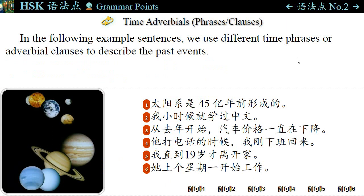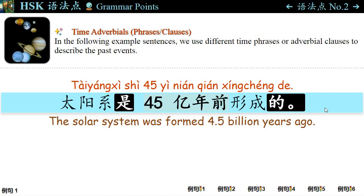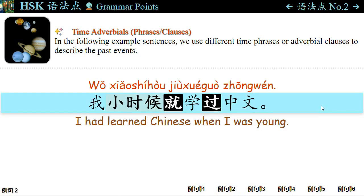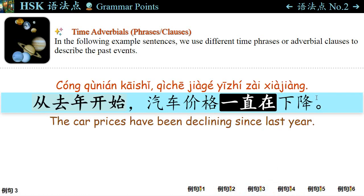语法点二: In the following example sentences, we use different time phrases or adverbial clauses to describe past events. For example: 太阳系是四十五亿年前形成的。 The solar system was formed 4.5 billion years ago. The sentence pattern 是...的 is used to emphasize the time. 例句二: 我小时候就学过中文。 When I was young, I already studied Chinese. 例句三: 从去年开始，汽车价格一直在下降。 Since last year, car prices have been declining.